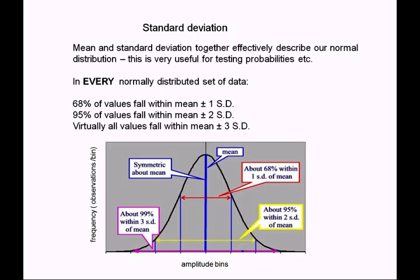Standard deviation is really useful — once you know the mean and the standard deviation of a normal distribution, you know everything about its shape. On the graph, the blue line up the middle is the mean and also the mode. The red box and arrow show plus or minus one standard deviation. The part of the distribution between those two lines includes roughly 68% of all values, and this is always the case for any normal distribution.